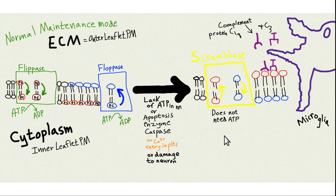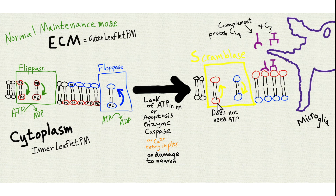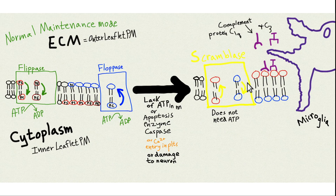The enzyme scramblase can be activated when a neuron is damaged and can't make enough ATP. Scramblase does not require ATP — which makes sense, because if it did, you wouldn't be able to use it when ATP is deficient. Scramblase can simultaneously flip things to the opposite of normal: it'll flip the phosphatidylserine to the outer leaflet and vice versa for the phosphatidylcholine. When this happens — phosphatidylserine in the outer leaflet, facing outward from the cell — complement proteins, these circulating proteins, will bind to the phosphatidylserines.